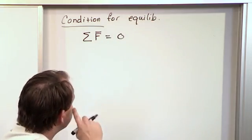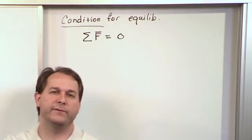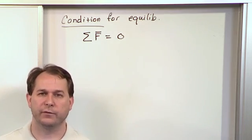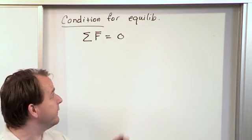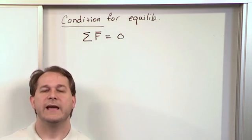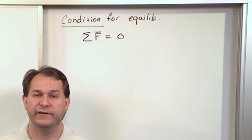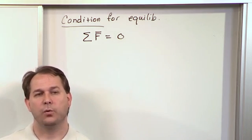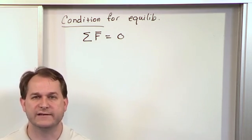The force acts this way, force acts this way, force acts this way, the weight might act down. We sum all those forces together vectorially, that's why there's a vector bar on top of the F. If the sum of those forces including the weight sums to zero, that means the object is motionless, or it's moving at a constant speed, not accelerating. Typically we talk about it not moving.